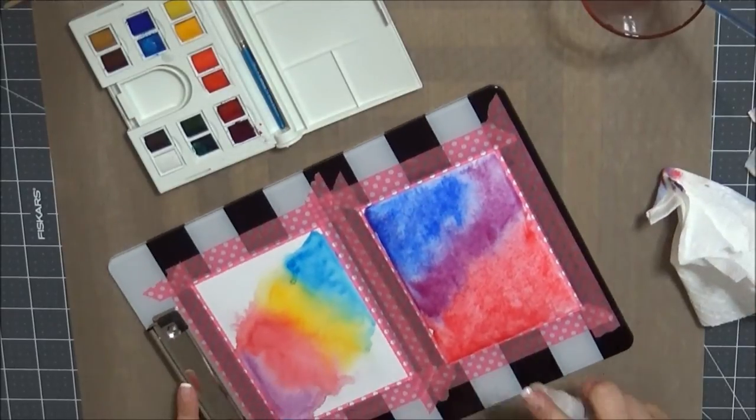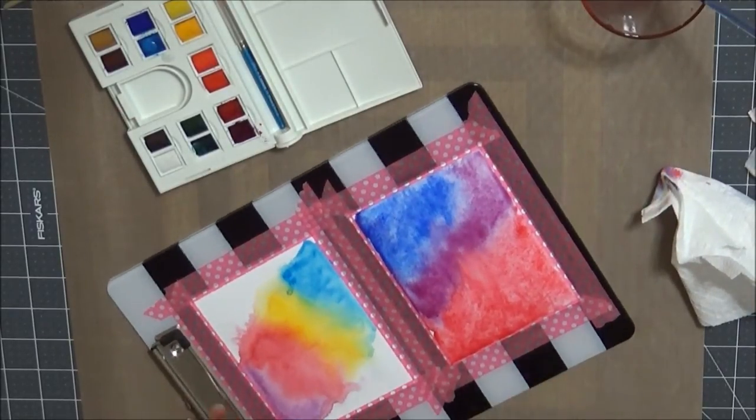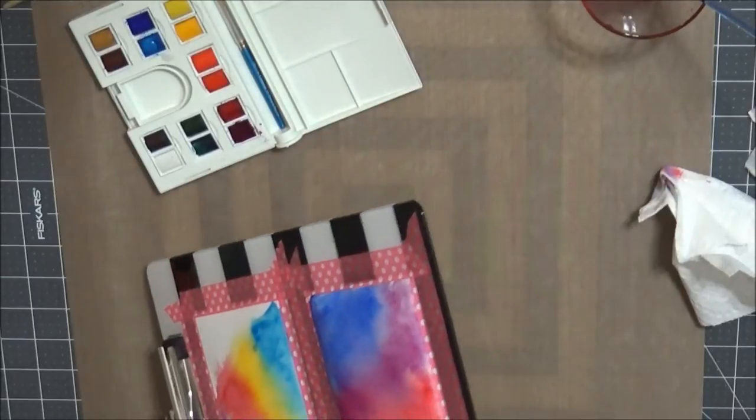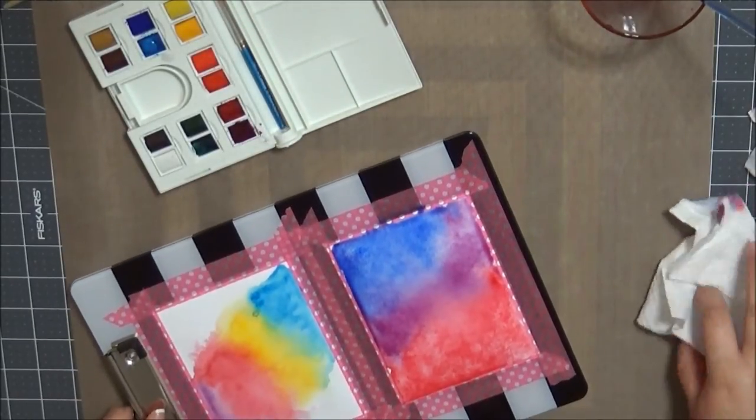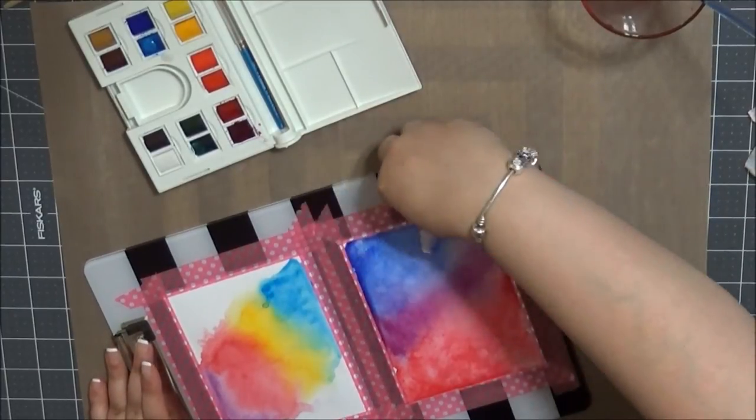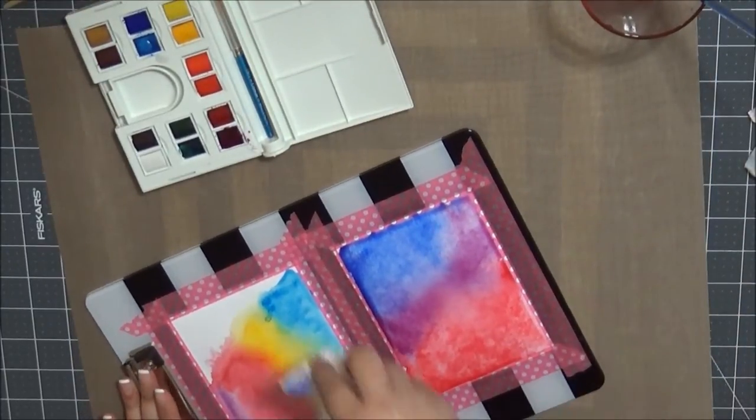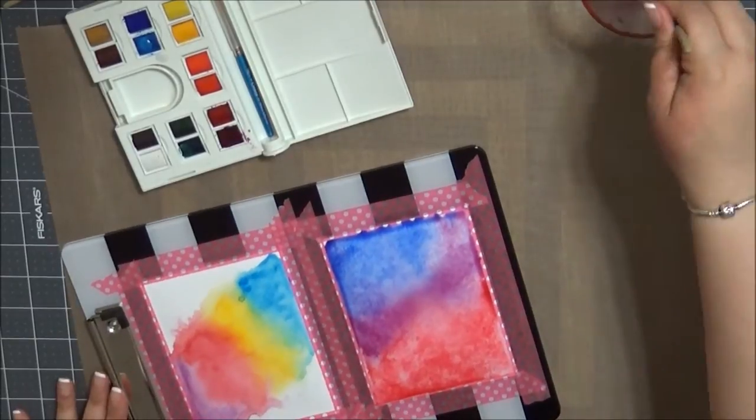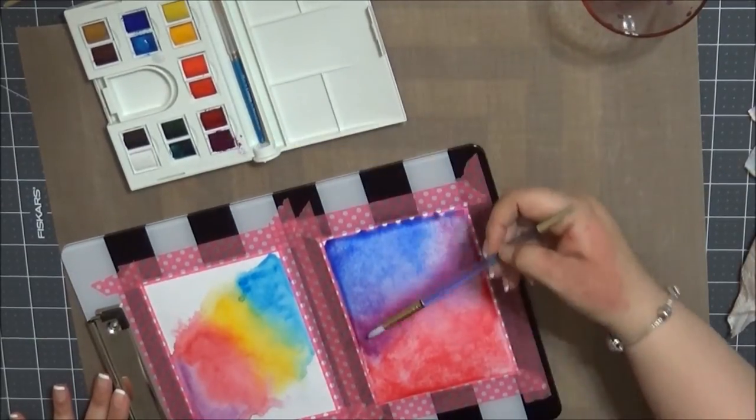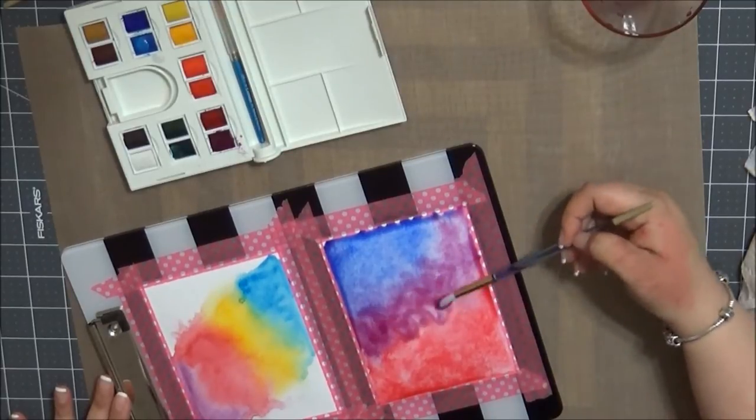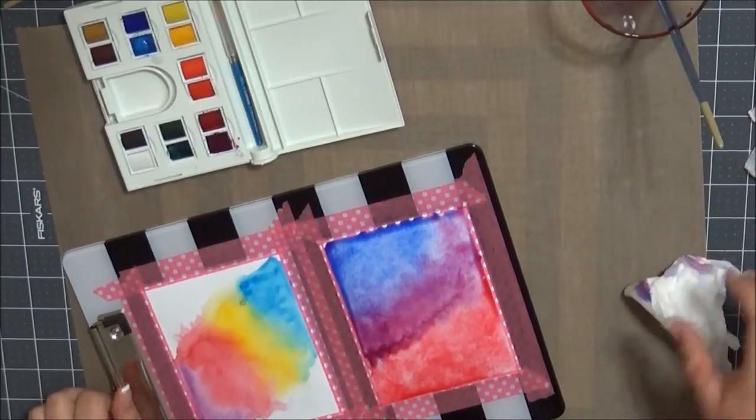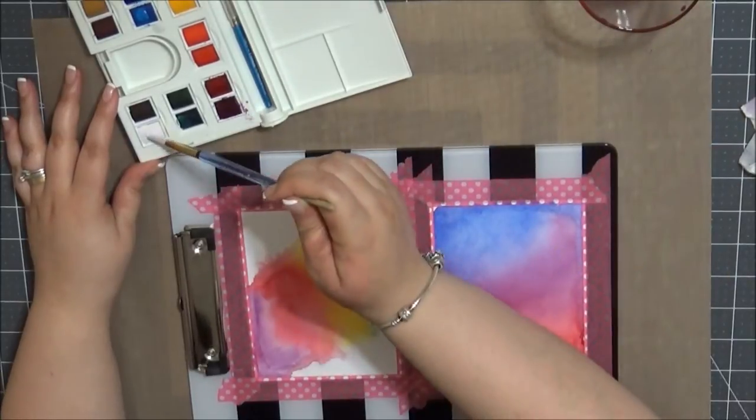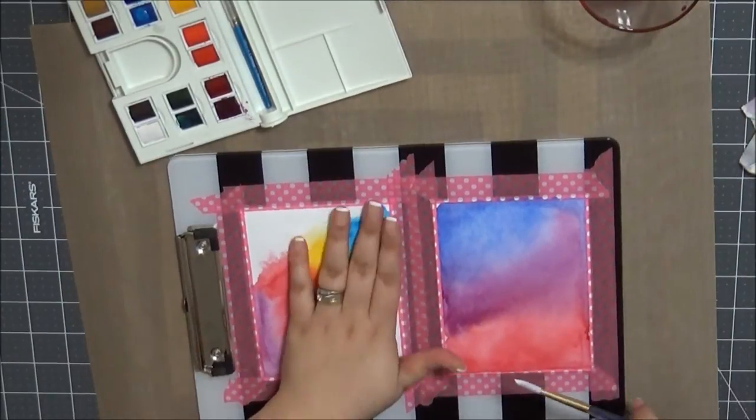Just wiping off the edges there. Sprayed some water. Got the colors moving. And I noticed my purple was gone. So I'll be putting on a little more purple. And then I'm taking it to my heat gun to dry it off. And it just softened those edges. It's absolutely gorgeous.